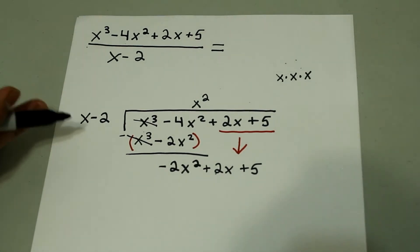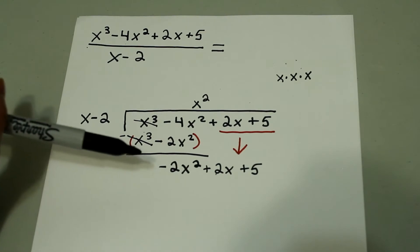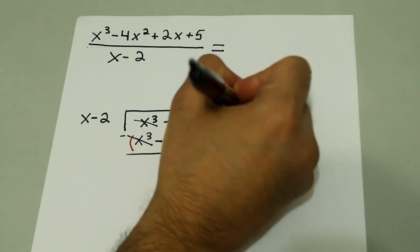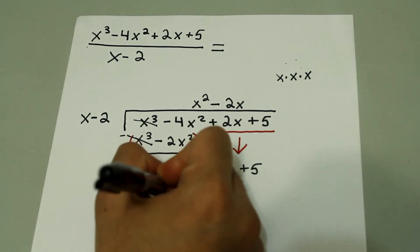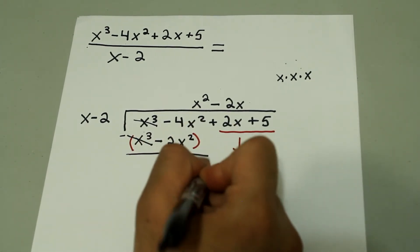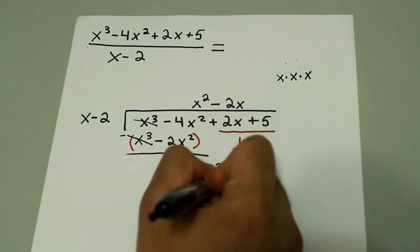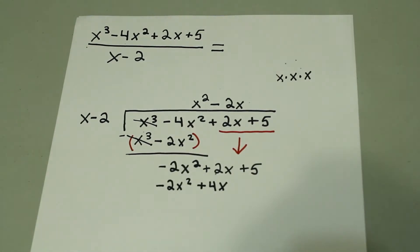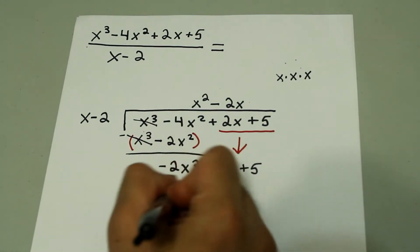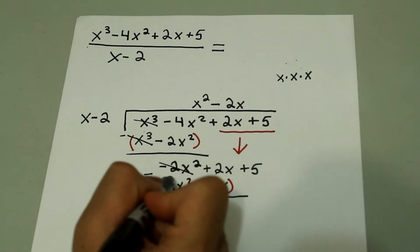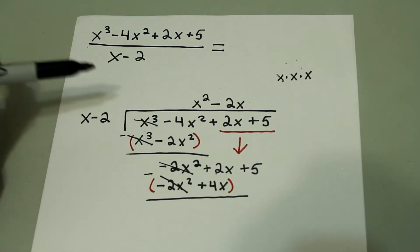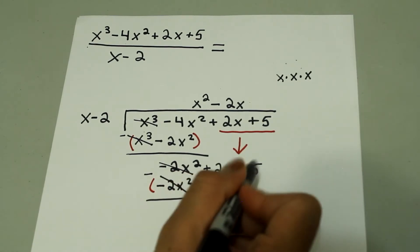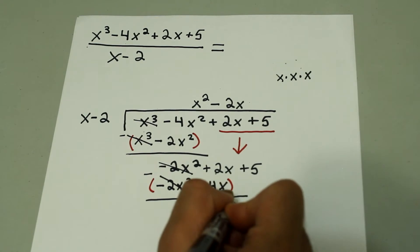Now I'm going to do the same thing. What times x gives me negative 2x squared? That's just negative 2x. So negative 2x times x minus 2: negative 2x times x is negative 2x squared, and negative 2x times negative 2 is plus 4x. Put parentheses around this entire quantity and then subtract. Just like before, the first term cancels. Then we have 2x minus 4x, which is negative 2x, and the 5 just comes down: plus 5.